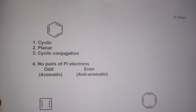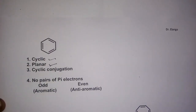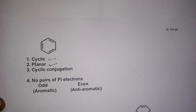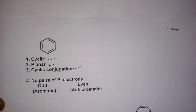Take benzene — is it cyclic? Yes. Is it planar? Yes. You can determine planarity using a molecular model; non-planarity results in twisting, flipping, or bending. Benzene is a well-known planar molecule. Regarding cyclic conjugation — some books call it extended conjugation, uninterrupted pi electron cloud — it means you need conjugated pi bonds throughout the ring. Let's look at benzene's structure.